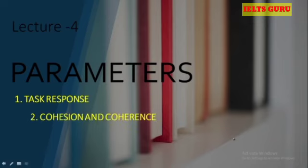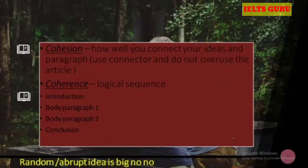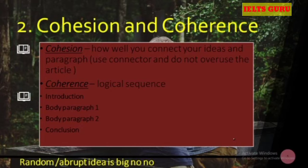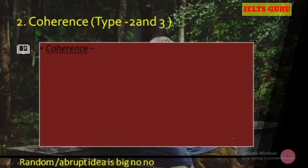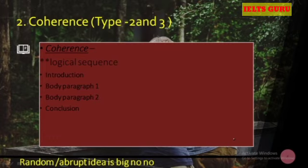Today we're discussing cohesion and coherence, but only coherence for specific types. Cohesion is basically how well your ideas are connected, and coherence is the logical sequence. The sequence has four steps: introduction, body paragraph 1, body paragraph 2, and conclusion. It's the same for all types. We're discussing coherence for different types because the inner content is different for all types, which we'll learn from an example. The way to write content changes for each type.